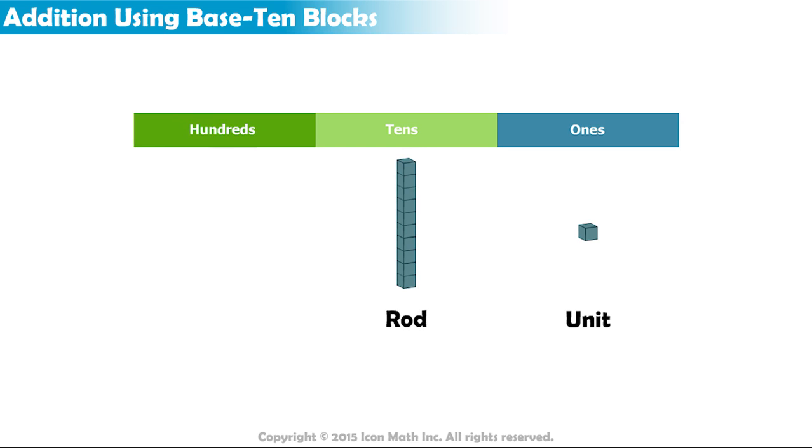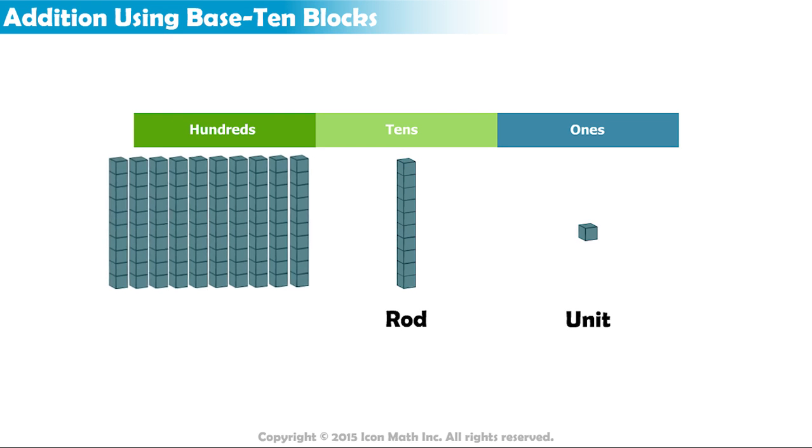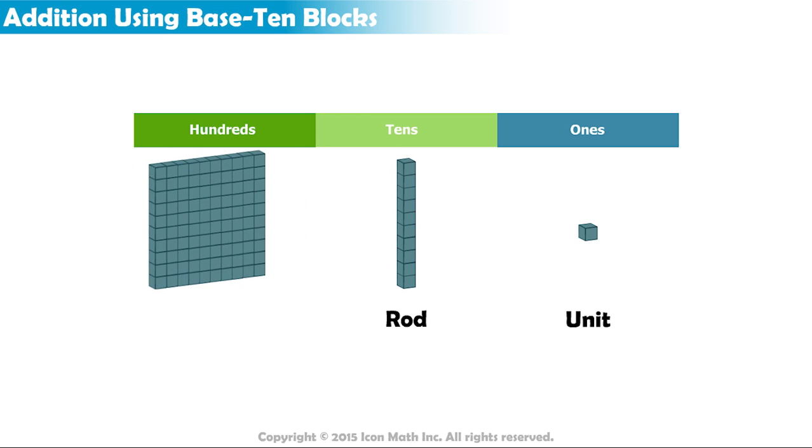The hundreds place is represented with 10 rods, which make a block of 100 units, and we call it a flat.